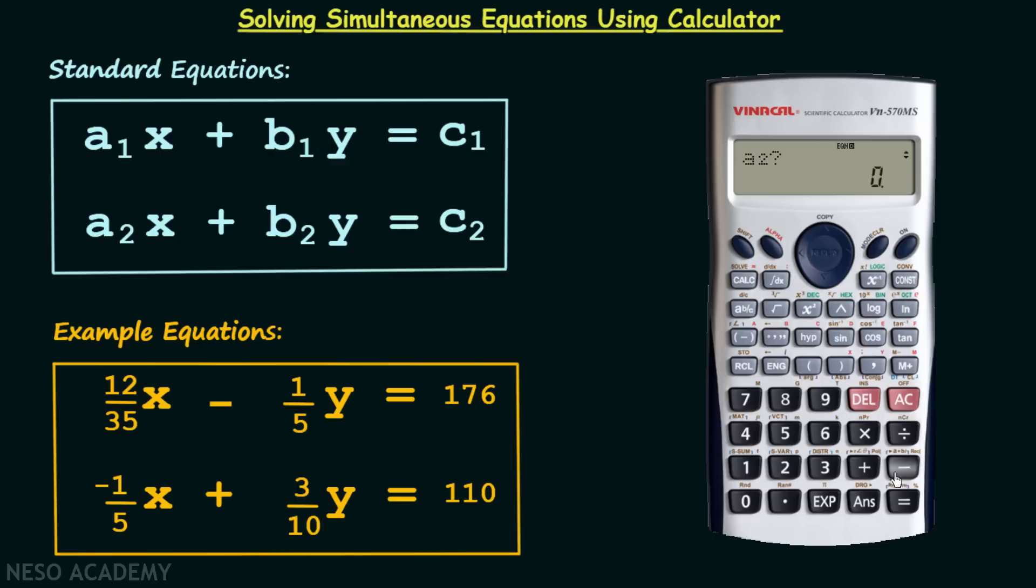a₂ is equal to minus 1 divided by 5. b₂ is equal to 3 divided by 10. And then finally c₂ is equal to 110.